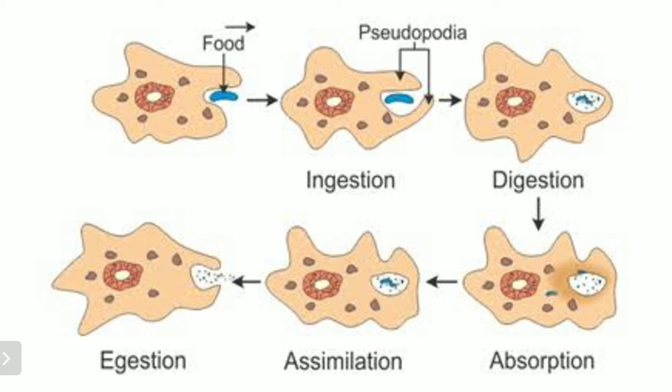We can say that amoeba eats tiny plants and animals as food, which float in the water in which it lives. The mode of nutrition in amoeba is holozoic.